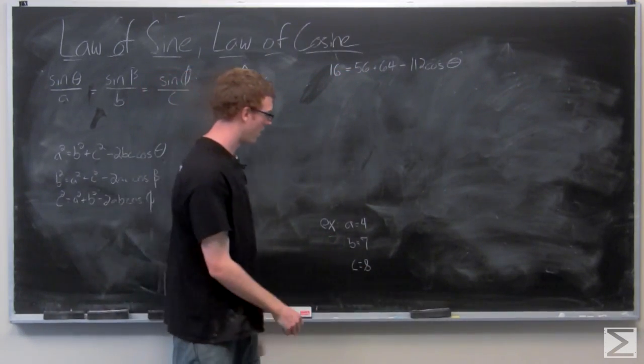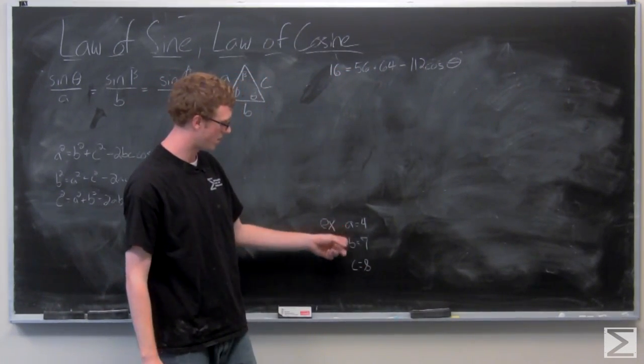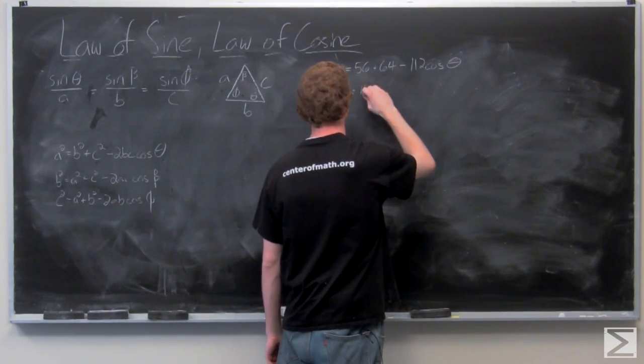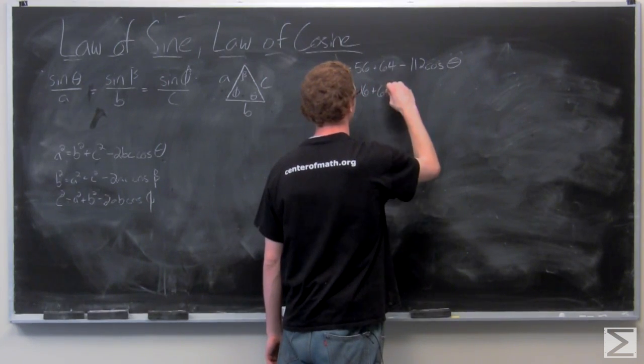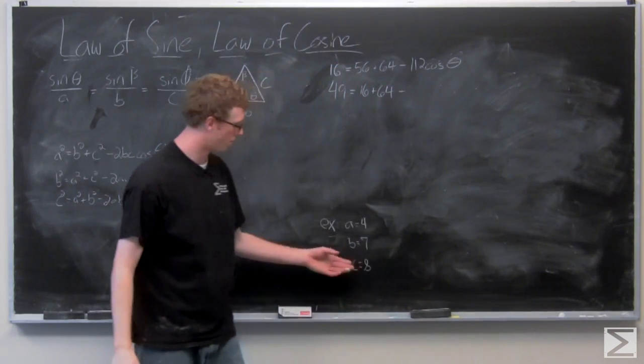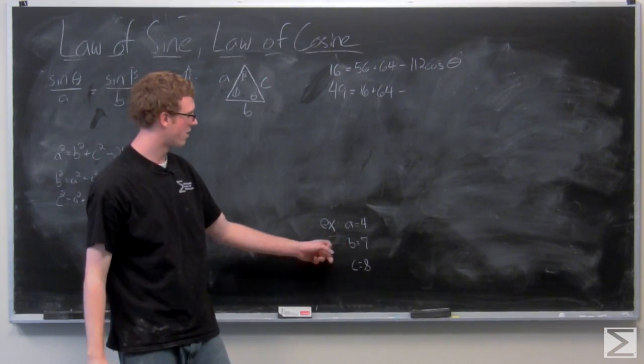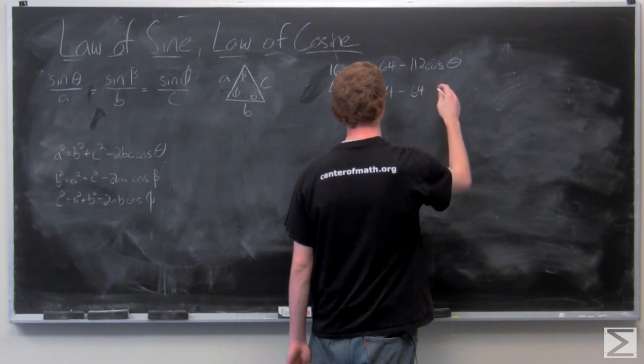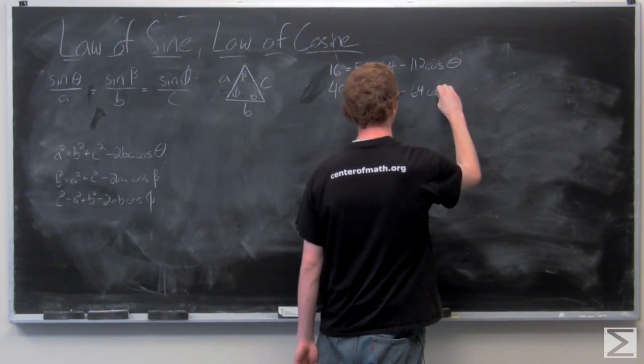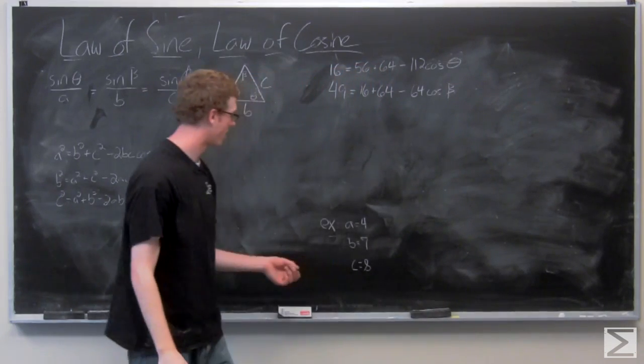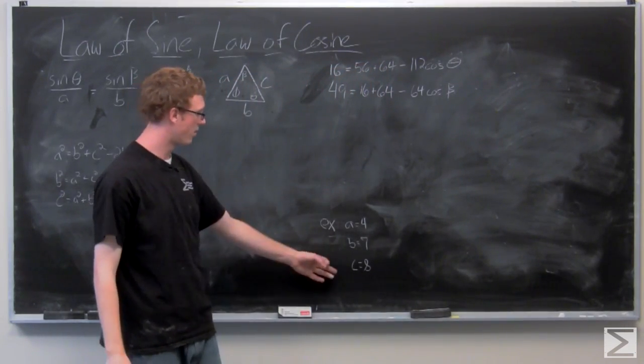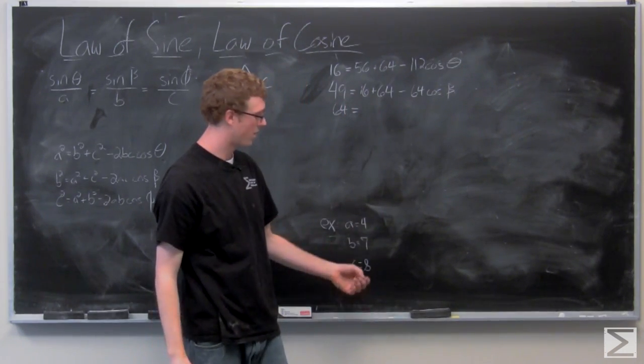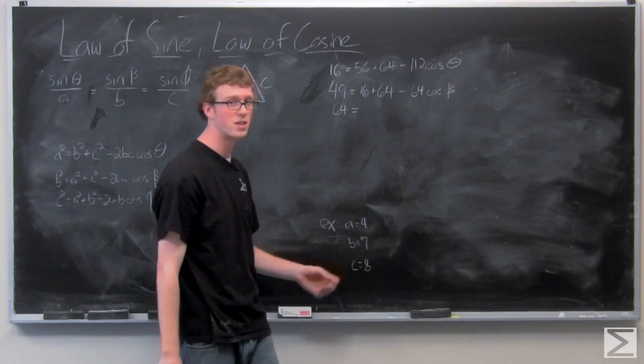For B, we're going to have 49 equals A squared plus C squared minus 2AC cosine of the angle opposite B, which is beta. And then we're going to have C squared, which is 64 equals A squared plus B squared minus 2AB cosine of the angle opposite C, which is phi.